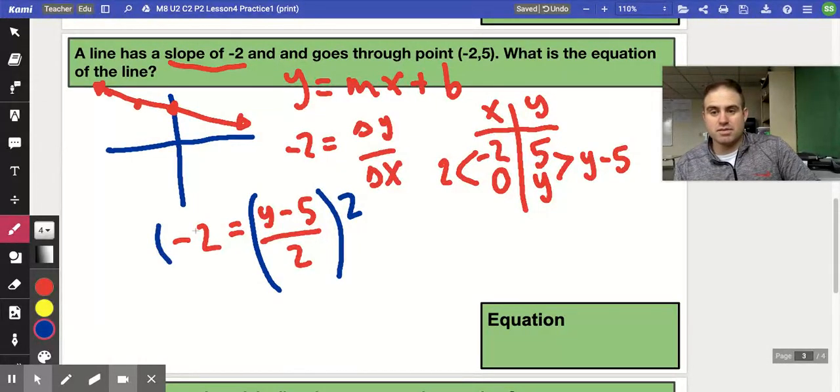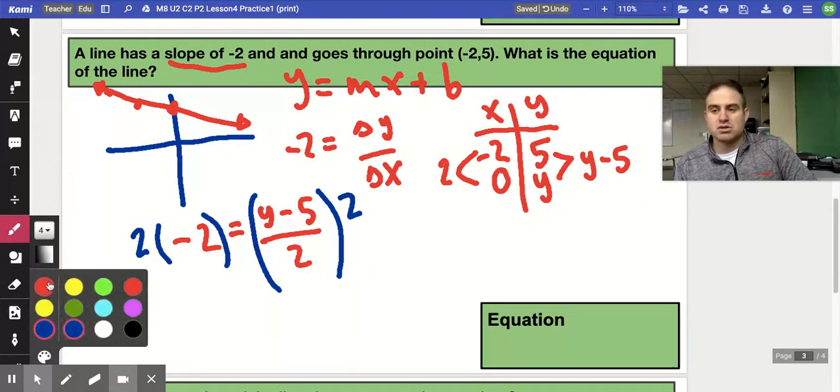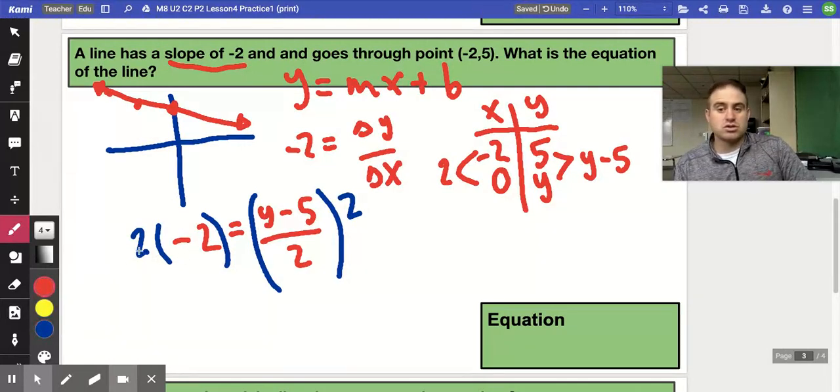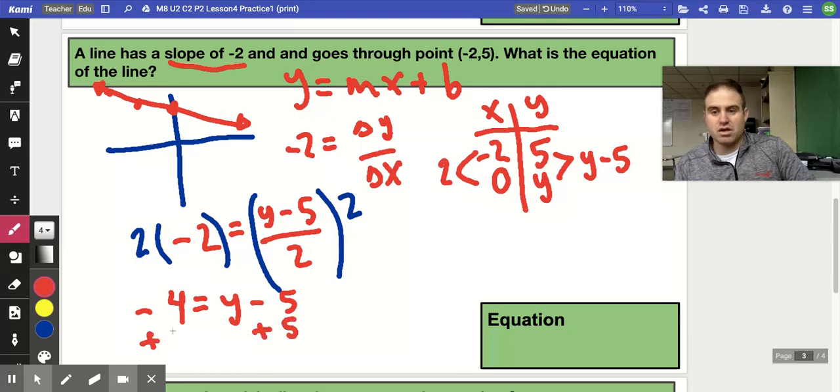We're going to multiply this by 2 because we have to do it to both sides. So negative 2 times 2 is negative 4 equals y minus 5, and then we add the 5 to both sides, and we're left with negative 4 plus 5 is 1 equal to y.